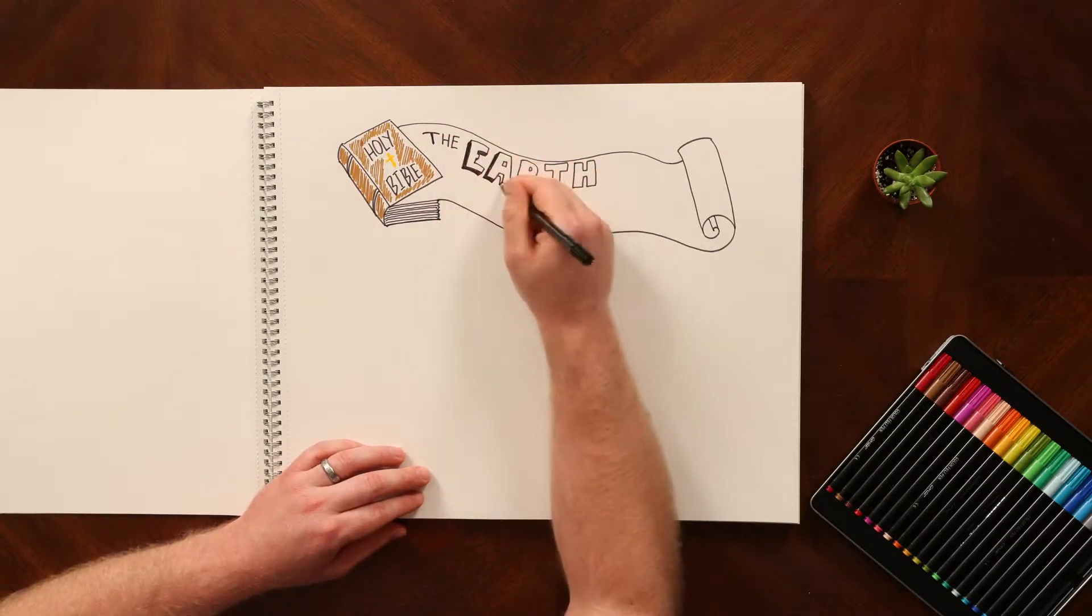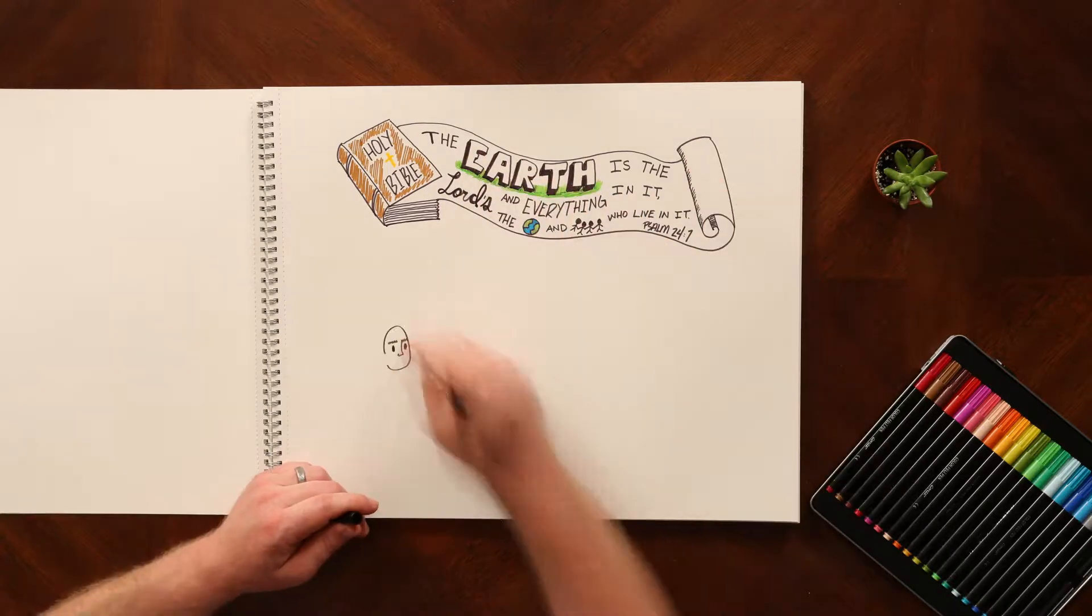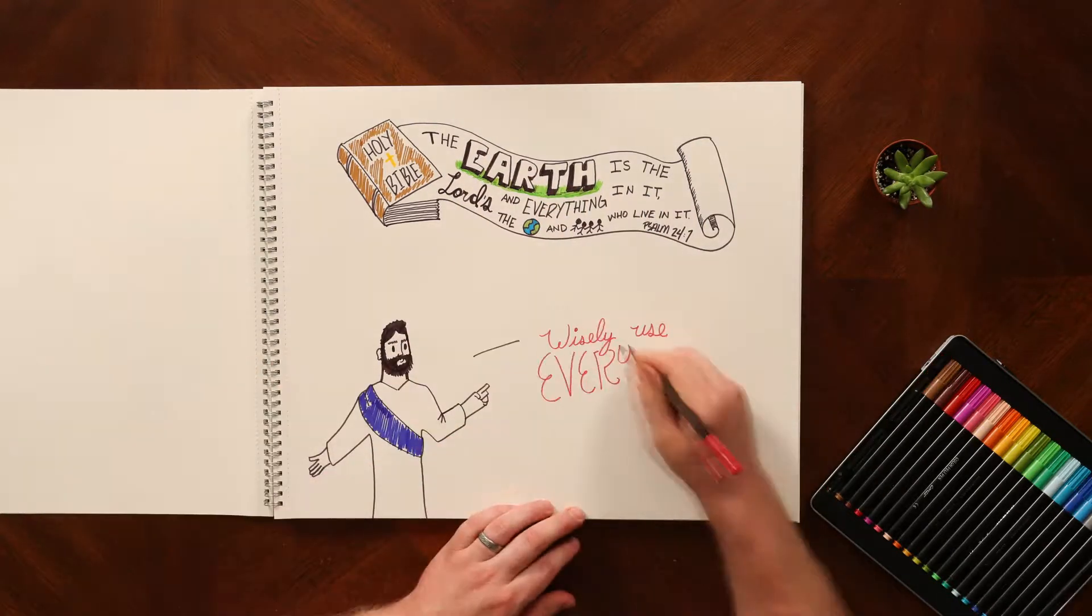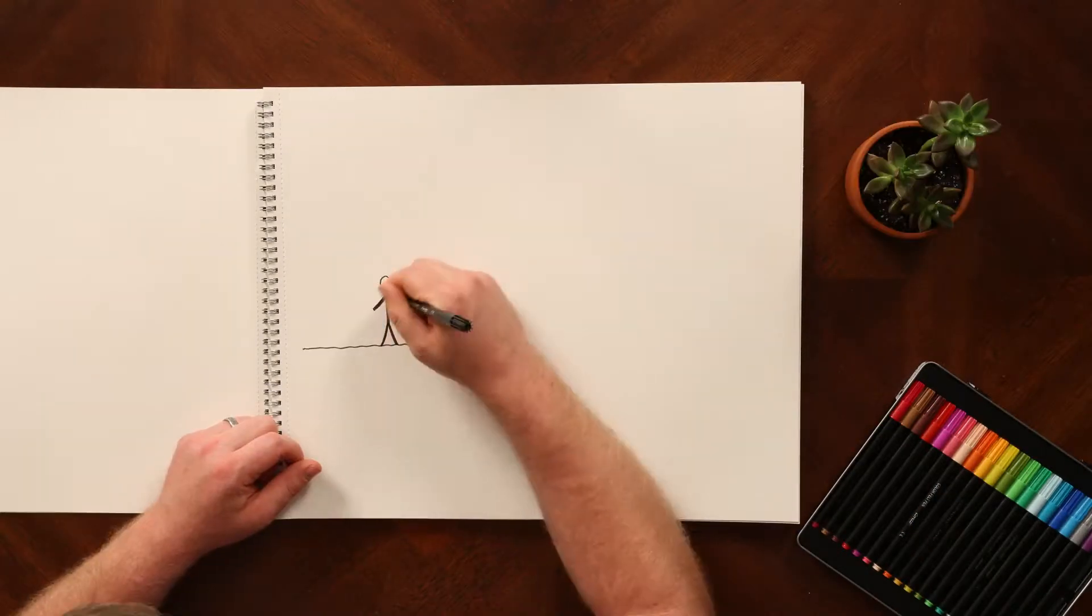Scripture like Psalm 24:1 make it very clear that God is the creator of everything and the owner of everything. But the story does not stop there. In the book of Matthew, Jesus commands us to wisely use everything he has given to us.